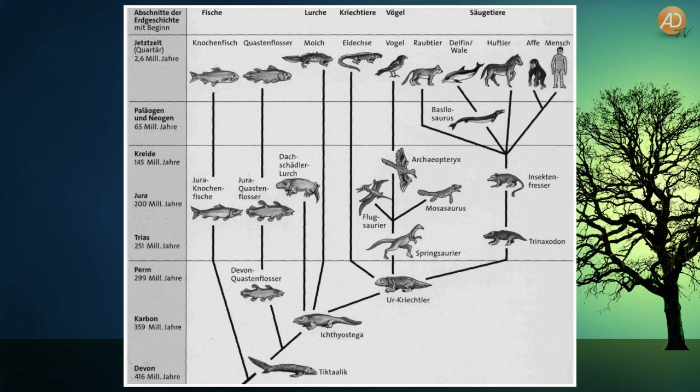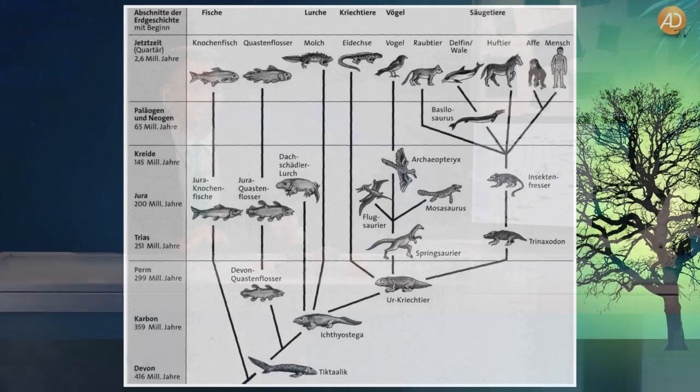Was wir aber festhalten können: Hier unten haben wir oft Fische, darüber oft die Amphibien und die Reptilien mit den Dinosauriern, und ganz oben dann die Säugetiere, die Vögel und den Menschen. Warum ist das so? Das ist das, was wir wirklich finden. Nach dem Evolutionsmodell würde es Sinn machen – es hat sich von klein auf entwickelt. Nach dem Schöpfungsmodell, wenn da ein Gott war, der alles geschaffen hat, müsste man sich ja fragen, warum wir dann das finden.